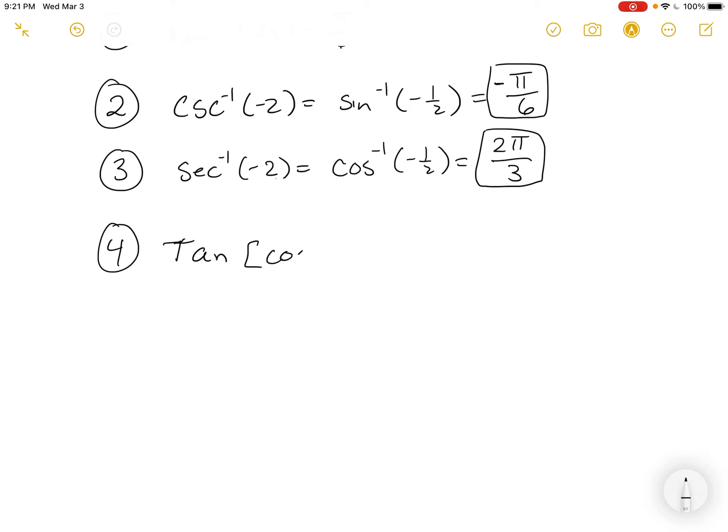Tangent of cosine inverse of root 2 over 2. Well, the best way to handle this is just to talk yourself through that. Cosine inverse, what angle do I take the cosine of and get root 2 over 2? Well, it's positive, so it's going to be from the first quadrant, and you know it's pi over 4.